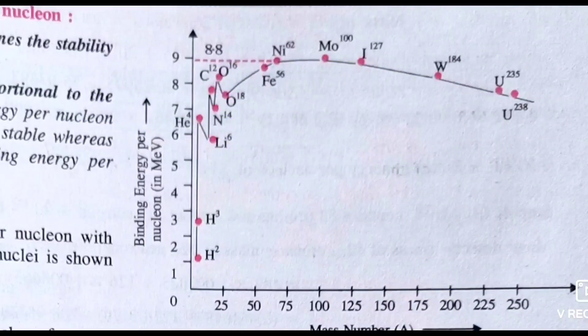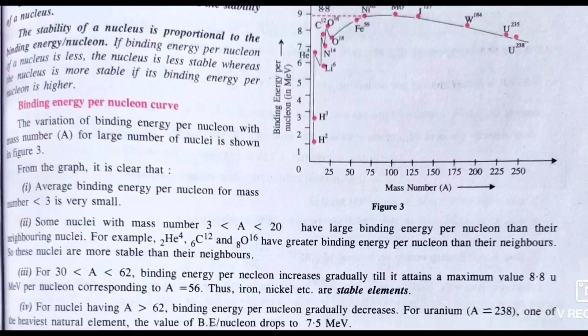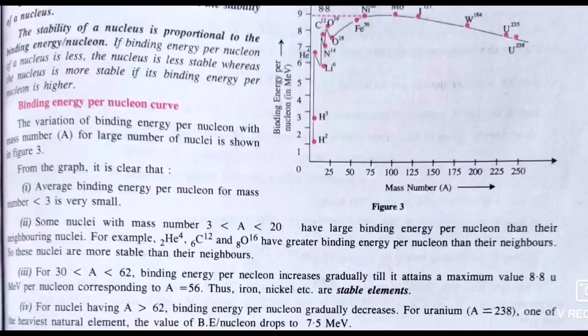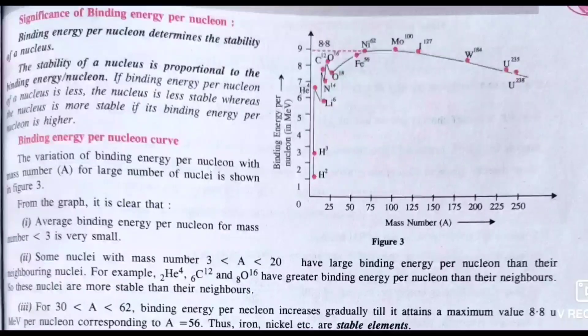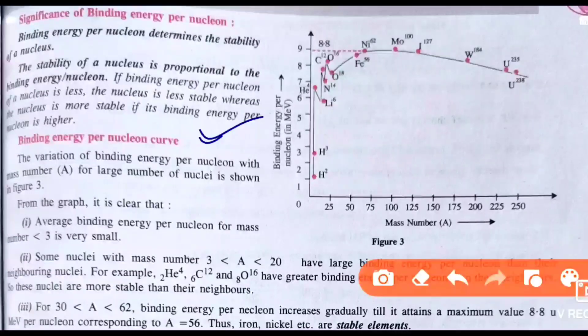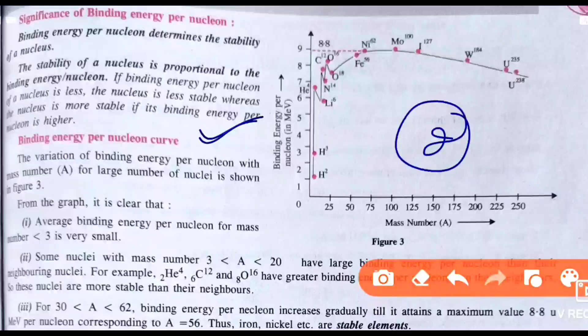From the peak, the curve gradually comes down on the lower side, and at the last comes uranium. We will read this whole curve to understand how binding energy behaves across different elements.